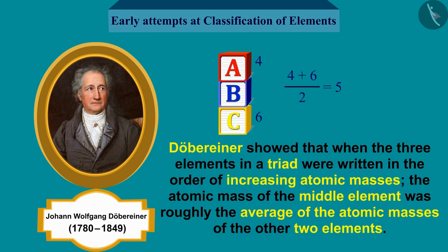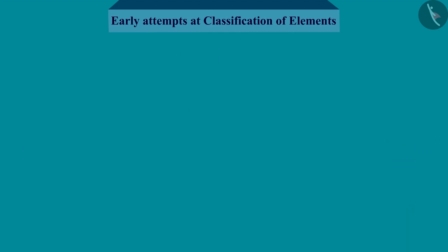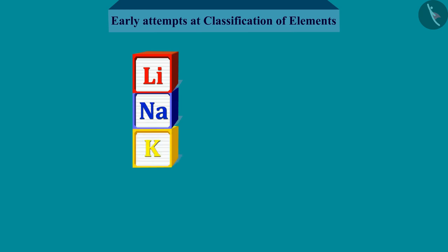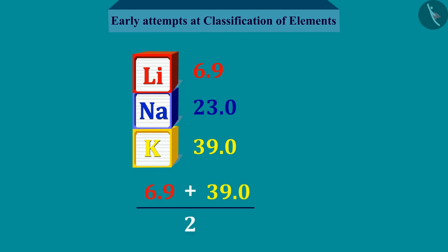Döbereiner showed that when the three elements in a triad were written in the order of increasing atomic masses, the atomic mass of the middle element was roughly the average of the atomic masses of the other two elements. For example, take the triad consisting of lithium (Li), sodium (Na), and potassium (K), with the respective atomic masses 6.9, 23.0, and 39.0. The average atomic mass of lithium and potassium is approximately equal to the atomic mass of sodium.